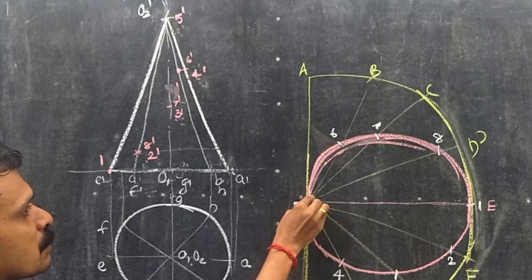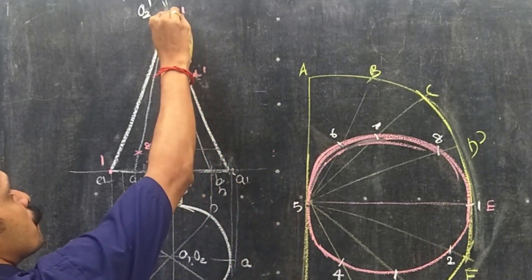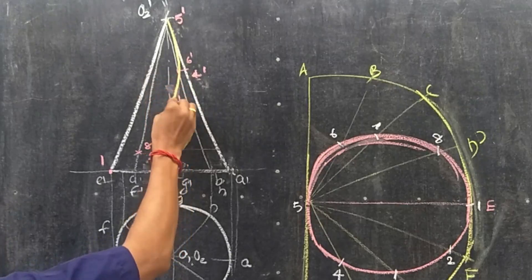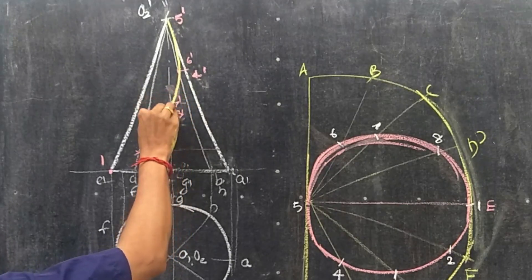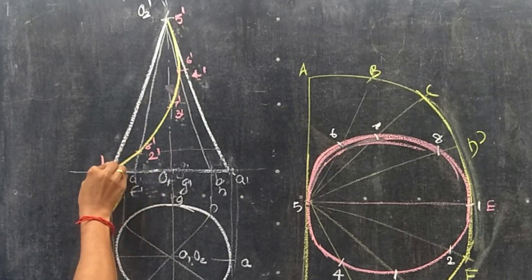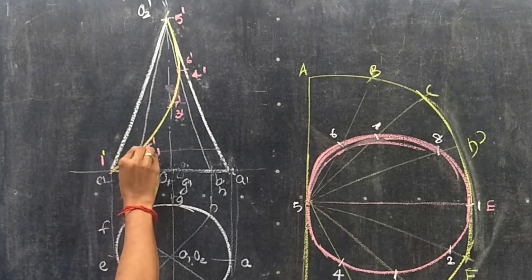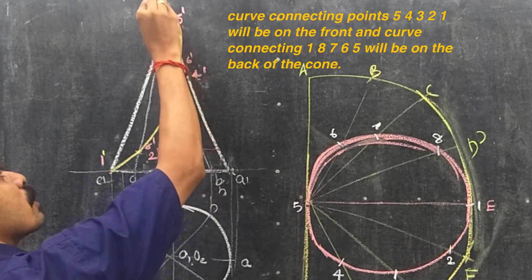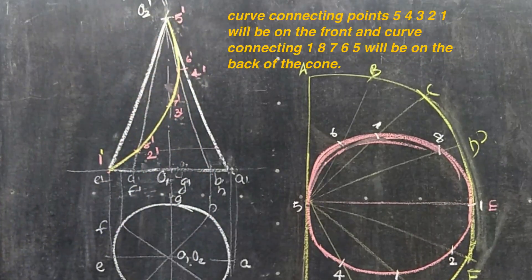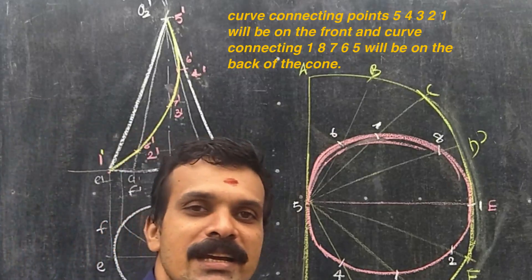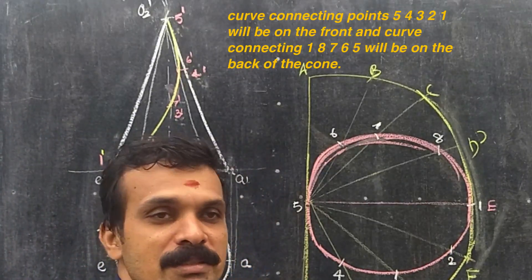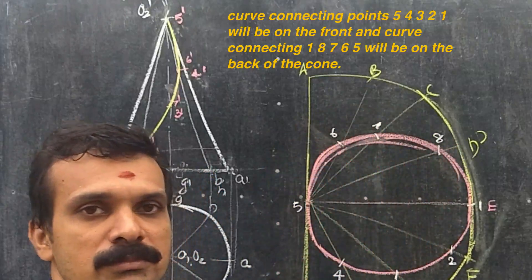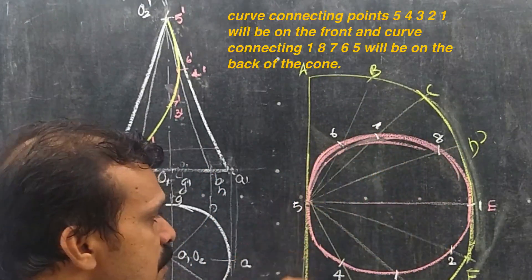Starting from 5-dash: 5 to 6-dash, 6 to 7-dash, 7-dash to 8-dash, 8-dash to 1-dash, 1-dash to 2-dash, 2-dash to 3-dash, 3-dash to 4-dash, 4-dash back to 5-dash. We have obtained the front view path of the circle.